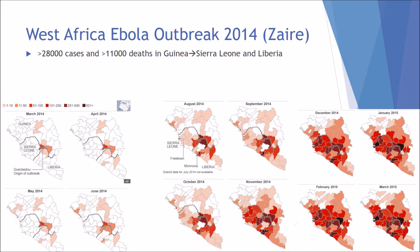Now let's talk about the West Africa Ebola outbreak of 2014. This is a similar strain to the Zaire virus. There were more than 28,000 reported cases and more than 11,000 deaths across Guinea, Sierra Leone, and Liberia. The first reported case was on the 2nd of December 2013, though it was only in March 2014 that proper data started coming in. In March 2014 the outbreak was quite concentrated at the border of Sierra Leone, Liberia, and Guinea, with some spread due to locals migrating for travel, gathering resources, and so on.